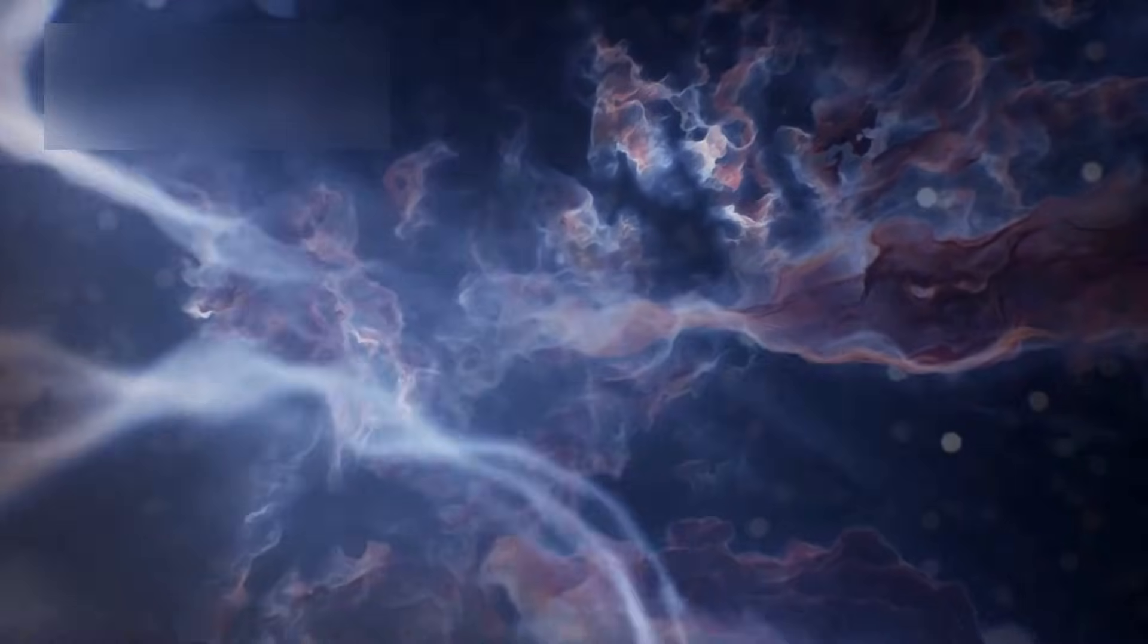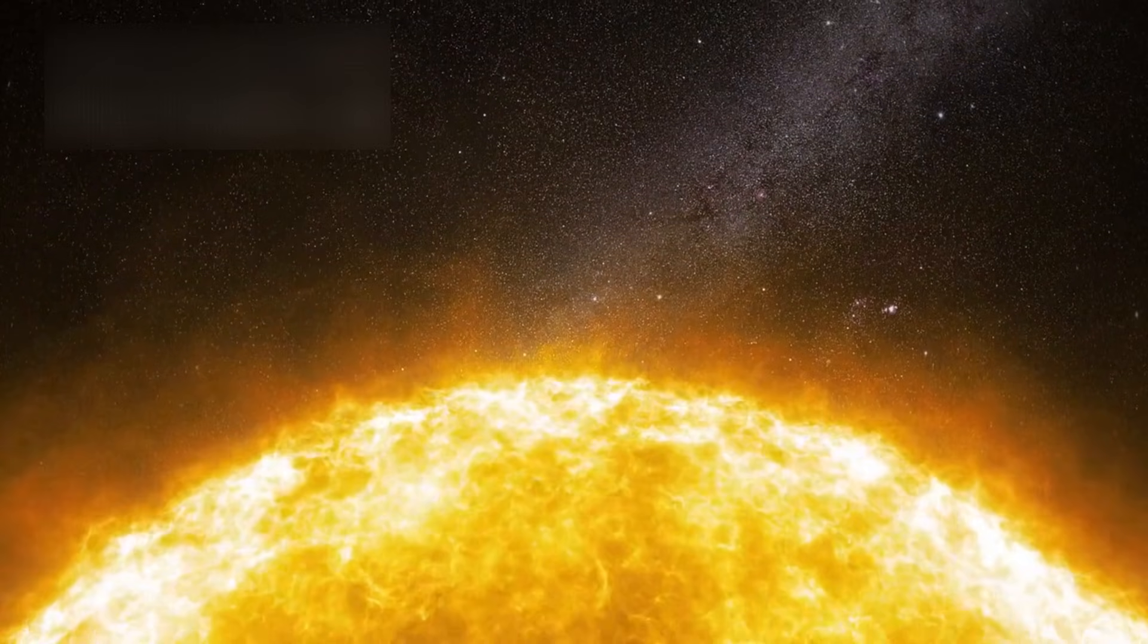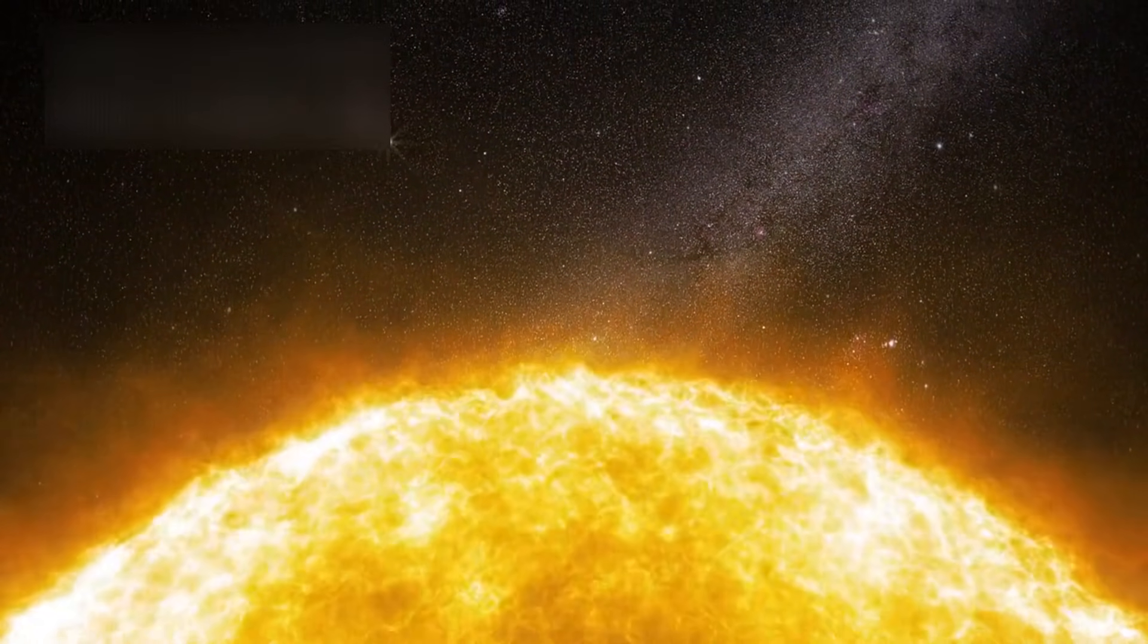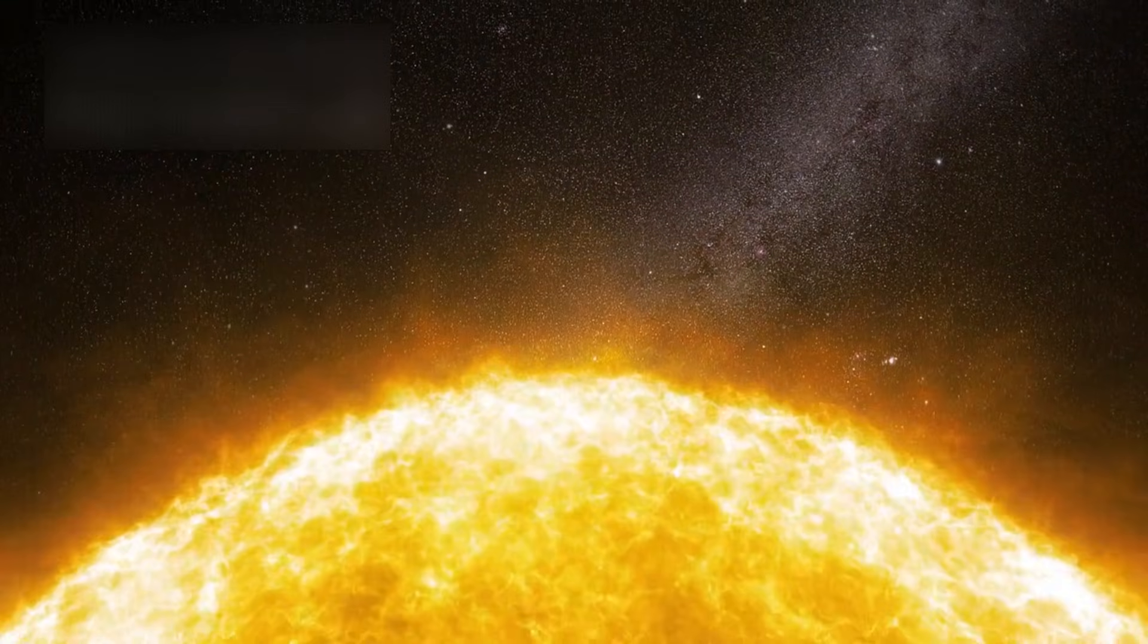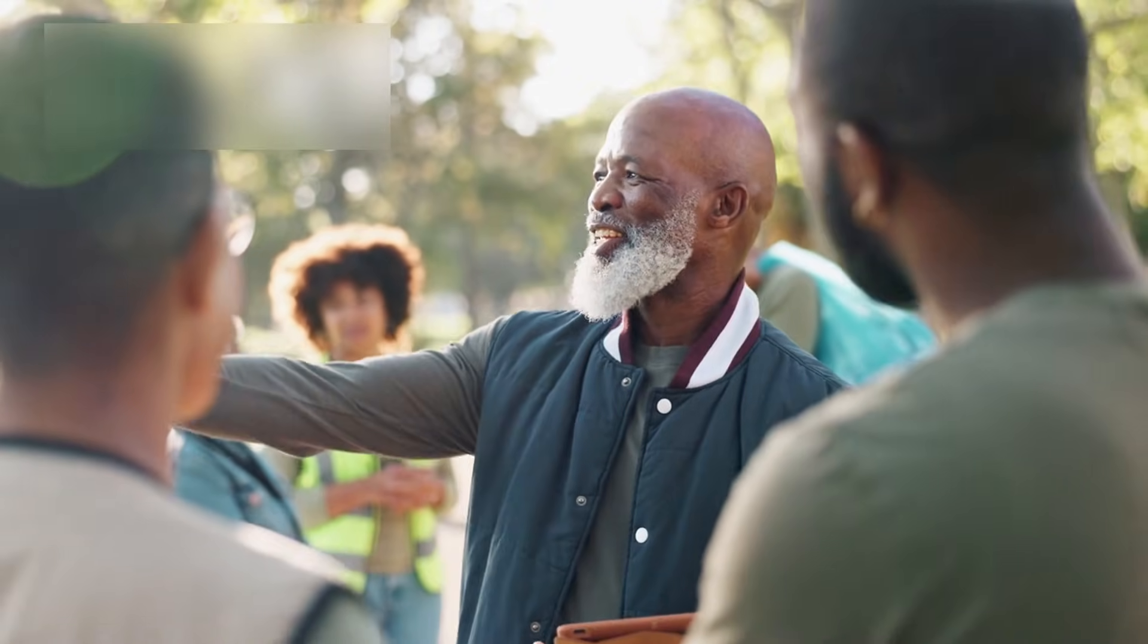In October 2017, astronomers witnessed something unprecedented. A mysterious object appeared, moving through our solar system, yet not of it. Unlike any asteroid or comet we had ever cataloged, this visitor came from beyond the sun's influence, an interstellar traveler carrying the story of another star. The object was named Oumuamua.